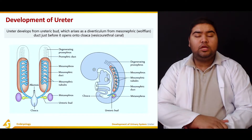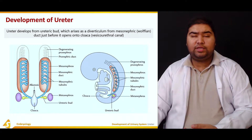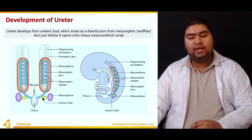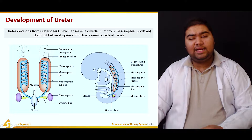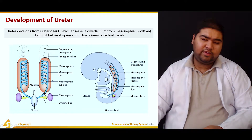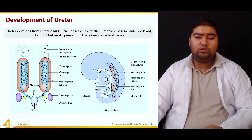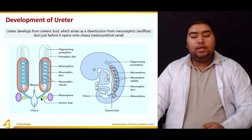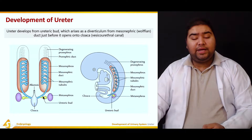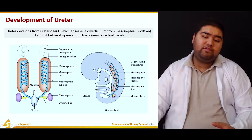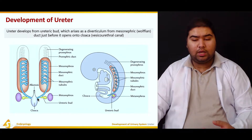The ureter develops from the ureteric bud. The ureteric bud arises as a diverticulum from the mesonephric duct, also known as the Wolffian duct. The ureteric bud is formed just before the mesonephric duct opens into the cloaca.